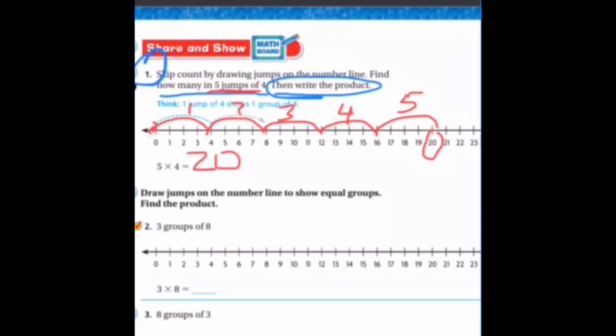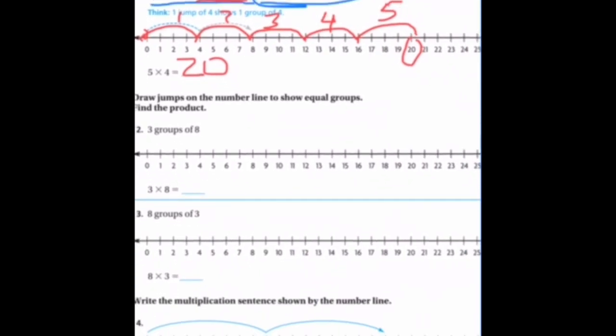So, that's what I expect to see from you as you do two, three, and four. Very similar type of work, right? Make sure you draw the right number of jumps, jump by the right amount, and write the product for the multiplication page. But, boys and girls, that's all I have for you today on the video. And when you're done with share and show, please show me your work, and then you can move on to your independent work.